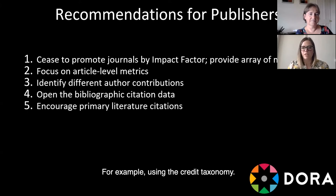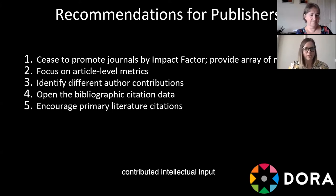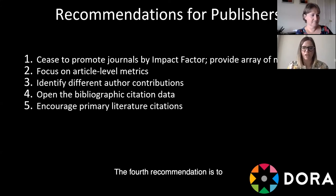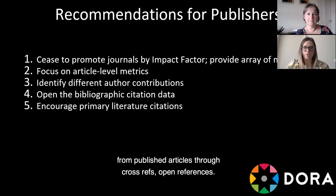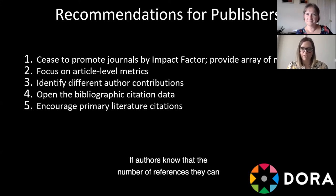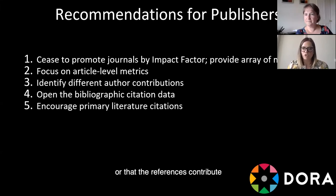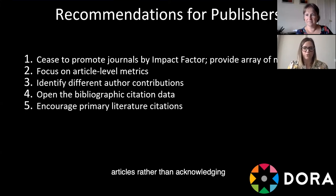Recommendation three is to identify different author contributions to an article — for example, using the CRediT taxonomy — so that it's clear who did the experimental work, contributed intellectual input, or provided materials for research. The fourth recommendation is to open the bibliographic citation data from published articles through Crossref open references. And fifth, please encourage your authors to cite primary literature. If authors know that the number of references they can include is limited or that references contribute to the length limits of an article, then they are more likely to cite a small number of review articles rather than acknowledging the primary sources of the research.